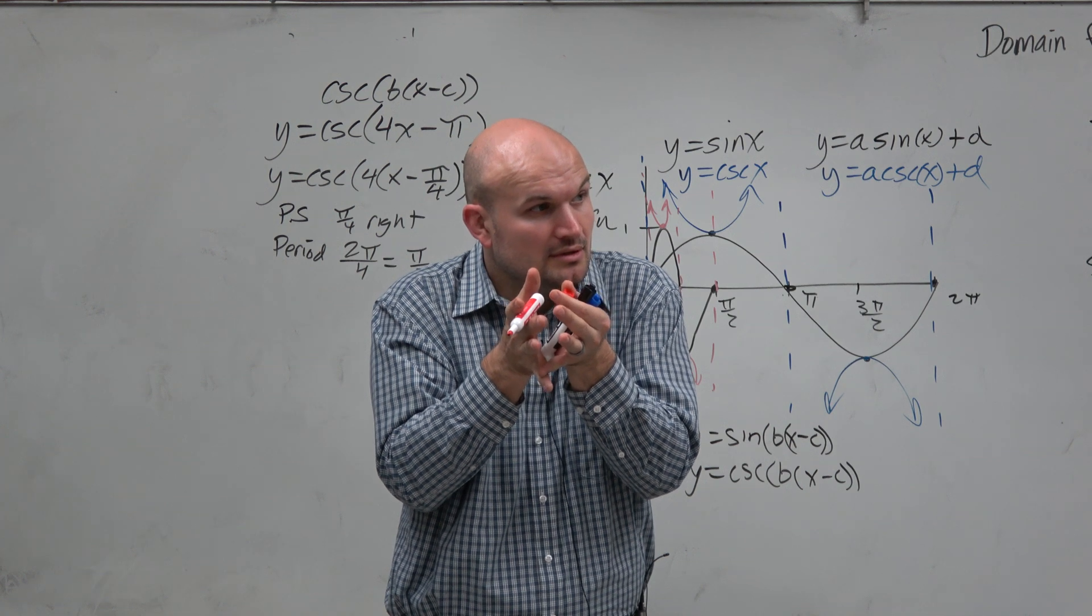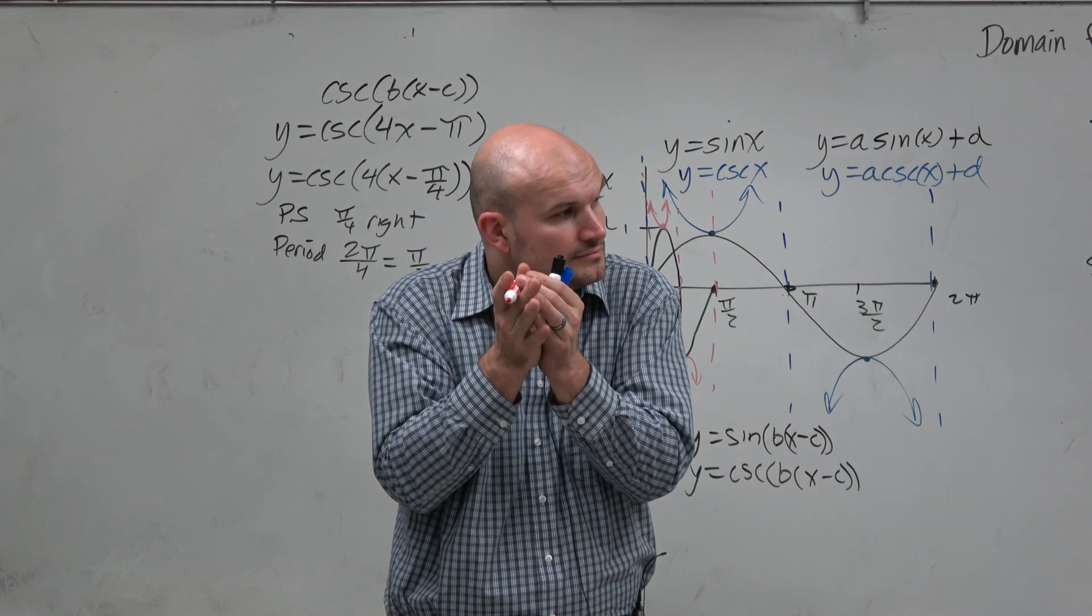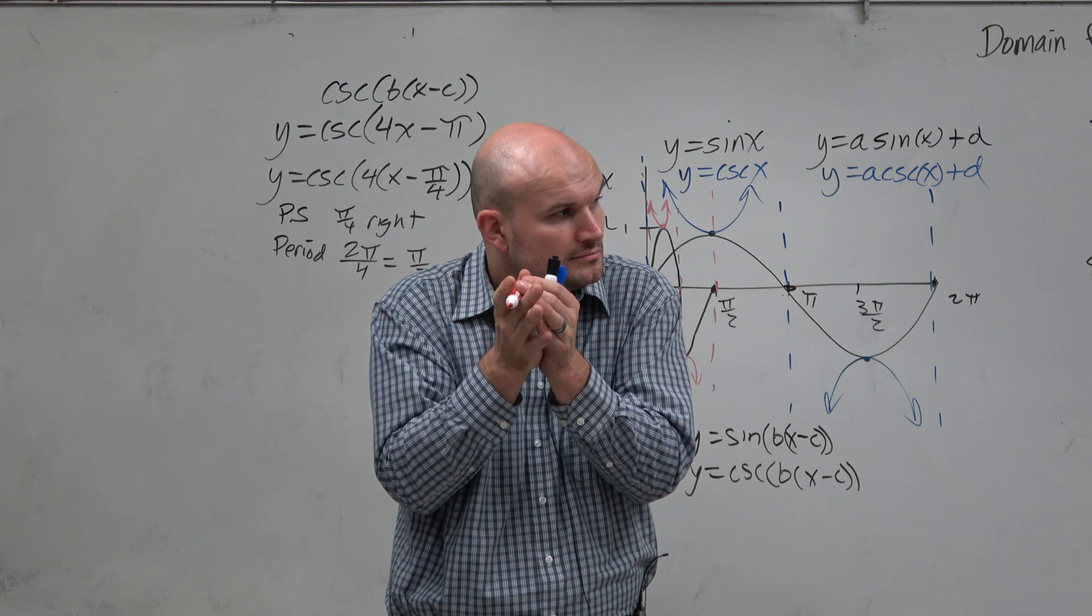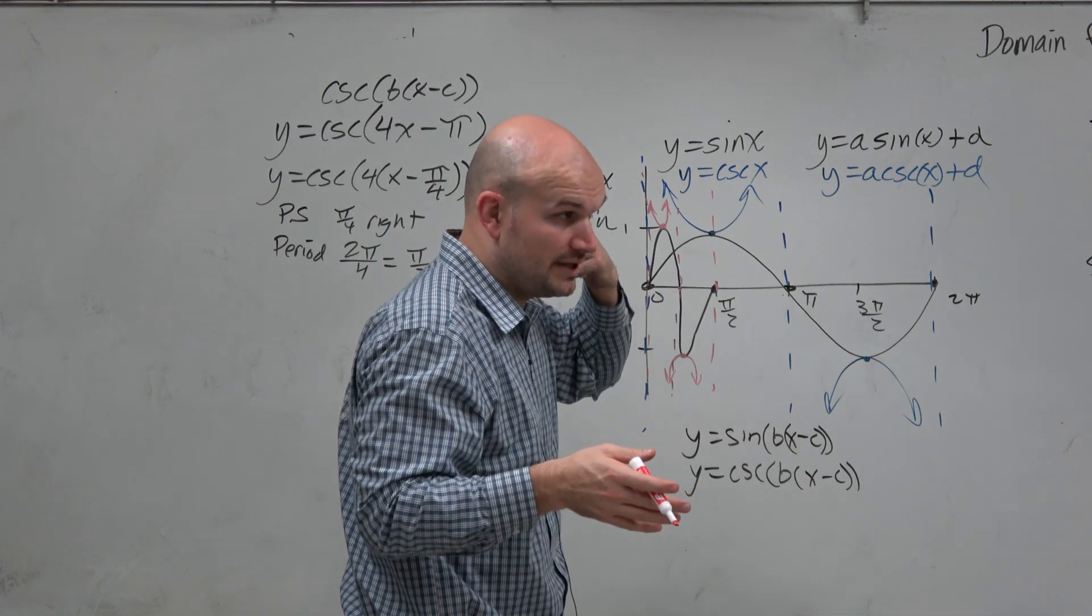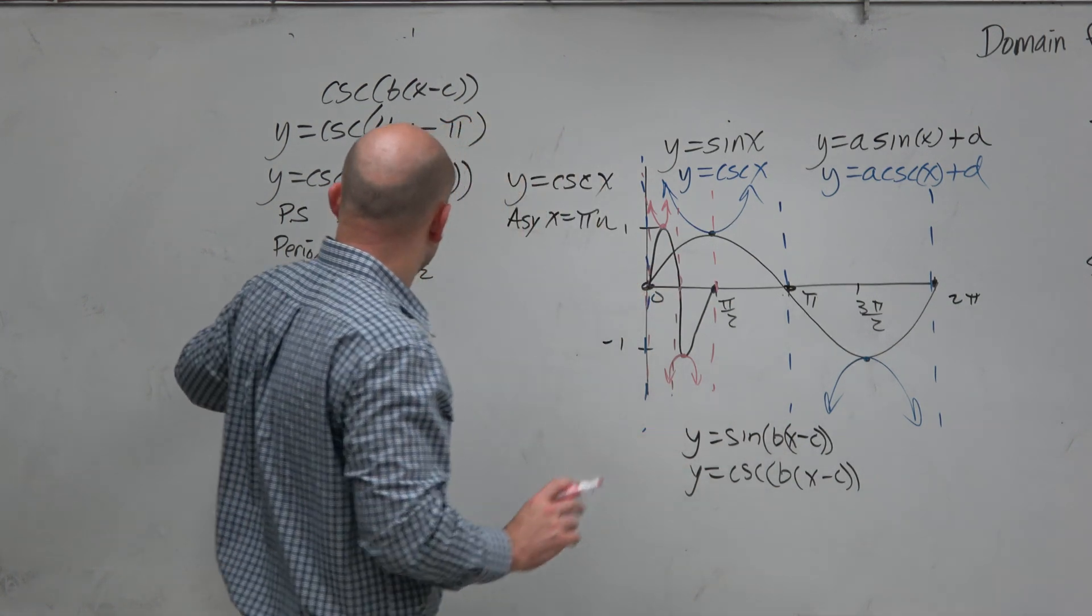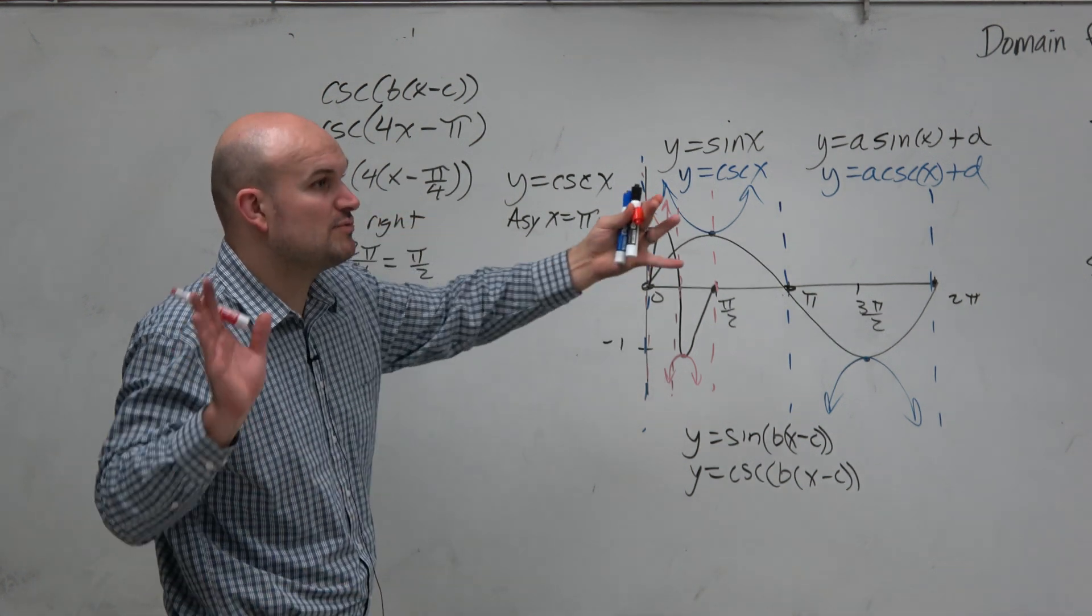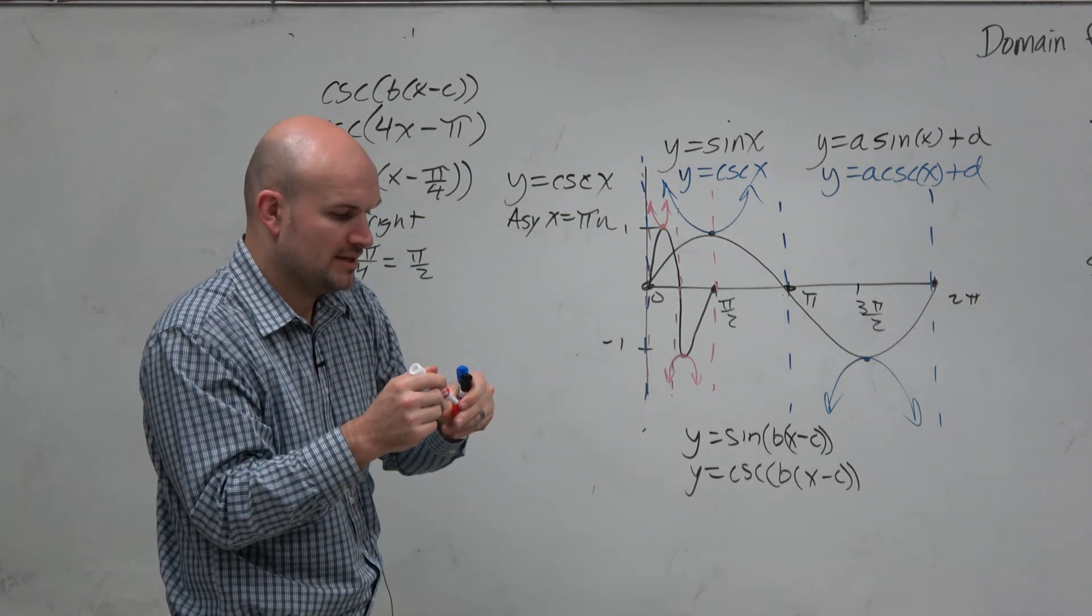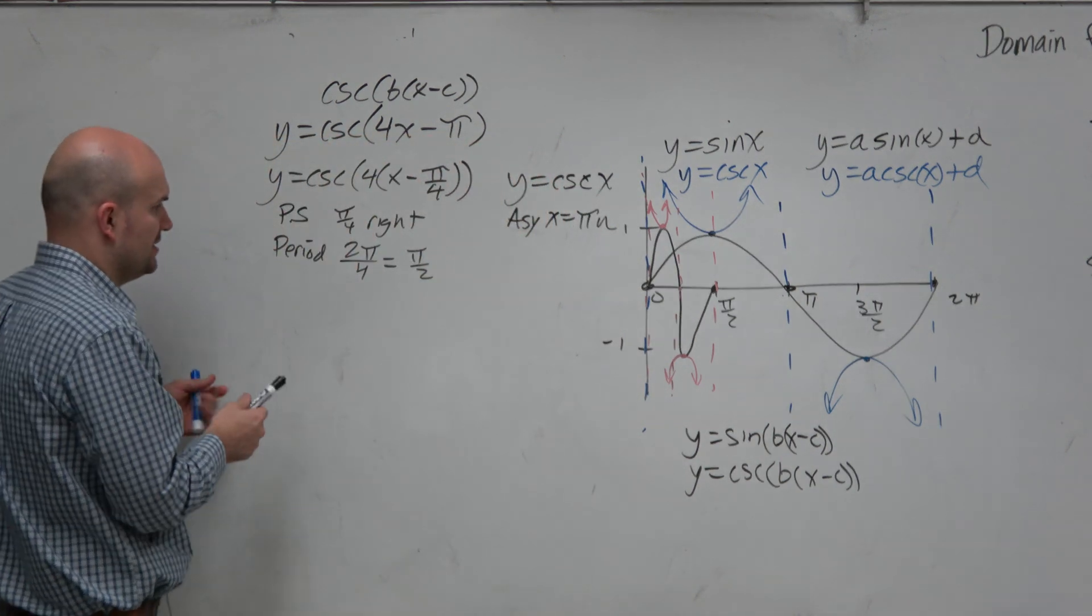But do you guys see how that compression shrinks the graph? Right? So you have an asymptote pi halves, but what is that other asymptote? Would it be at 2 pi over 4 or what would it be? Here? Let's figure it out. Now, again, also remember, this graph got shifted pi over 4 to the right, which I'm not representing here. I'm just representing the compression. But we're going to talk about that here in a second.